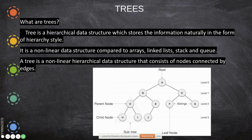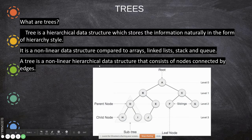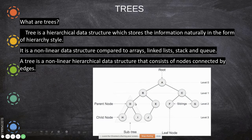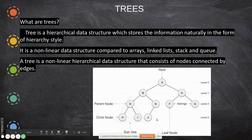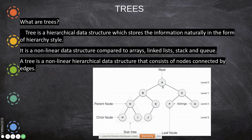For example, in a file system recent access will come first so that you can access it quickly. A tree is a non-linear hierarchical data structure that consists of nodes connected by edges. You can directly go to the respective node just by following the path. The value stored is said to be a node. Two nodes are connected by edges. There are also levels — this is at level zero, level one, level two, level three and so on.